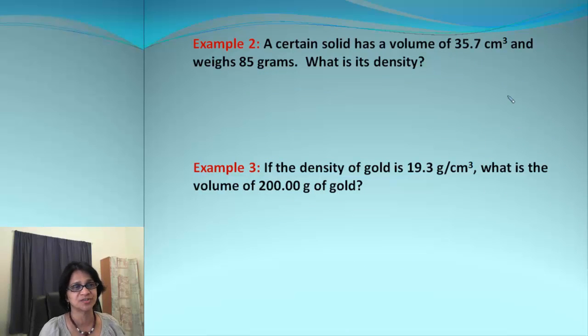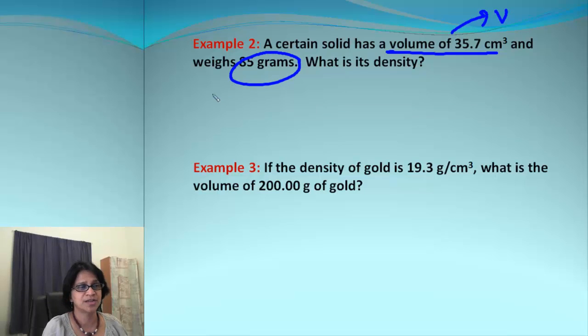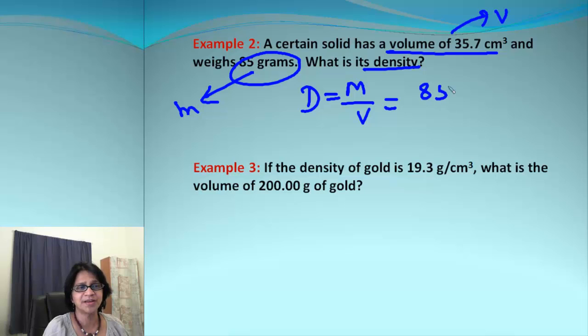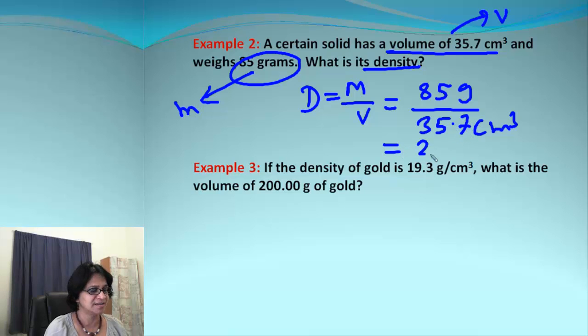Here are some examples. Volume is given as 35.7, that's V. This is given as mass, that's M. We have to find out density. The formula is simply dividing those two. Your job is to plug in those values along with the units and then simplify. When I solve, I get the answer 2.38 grams per centimeter cube.